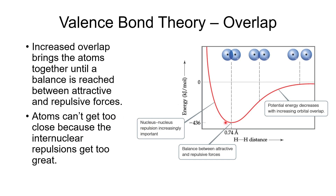This bond energy diagram shows bond energy as a function of how close the nuclei are. At infinite distance, the orbitals don't overlap and there's no bond energy — the energy is at zero. As the atoms get closer, their electrons start to overlap and we get some bonding benefit, so the energy goes down. It continues to go down as overlap improves until we reach an optimal minimum. Beyond that point, the internuclear repulsive forces become too strong.